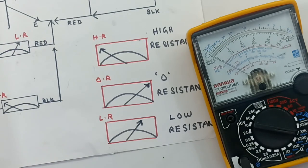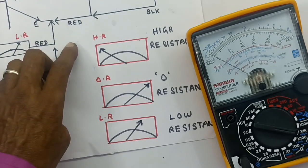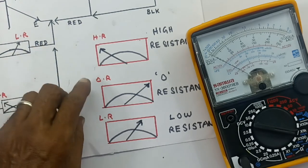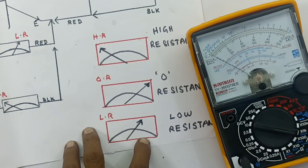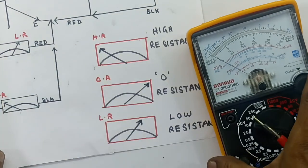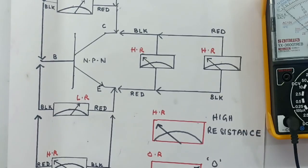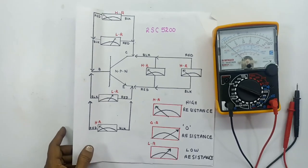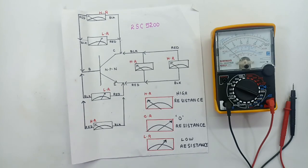If you need a low resistance — the multimeter has three positions: high resistance, low resistance, and zero resistance. The memorizer is at 20. Checking the 2SE5200 — checking method.